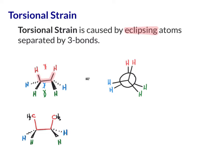Another place where you'll see torsional strain, where it may not be quite as apparent, is in rings where atoms are eclipsed. For example, in cyclopropane, because it's planar, we have forced eclipses between the hydrogens. Two highlighted hydrogens are both in the plane, separated by one, two, three bonds, giving torsional strain. In fact, all of the hydrogens in cyclopropane are experiencing torsional strain.